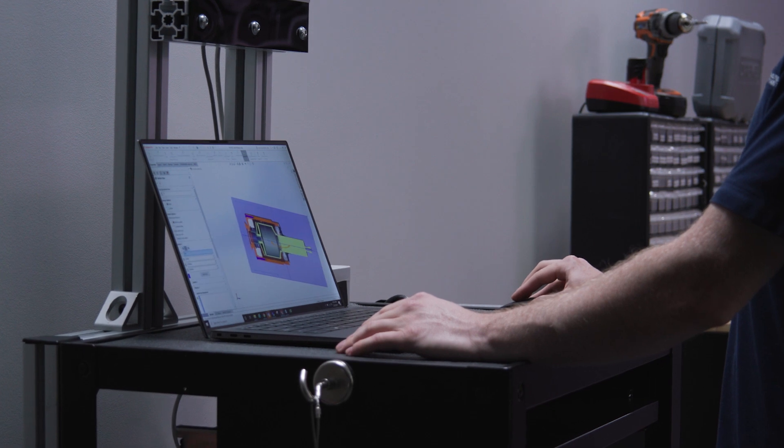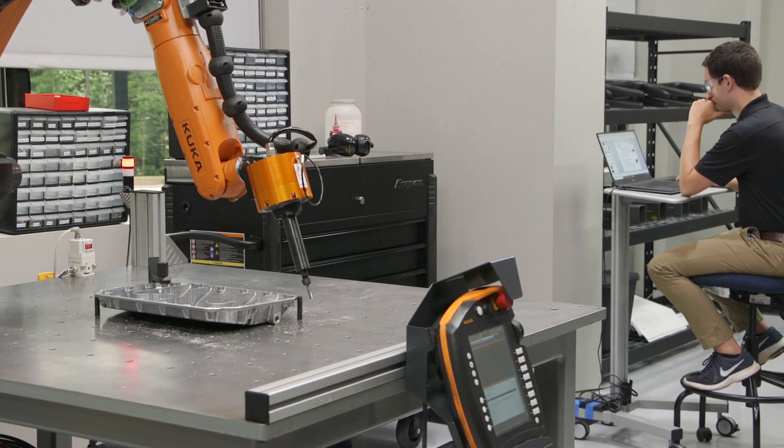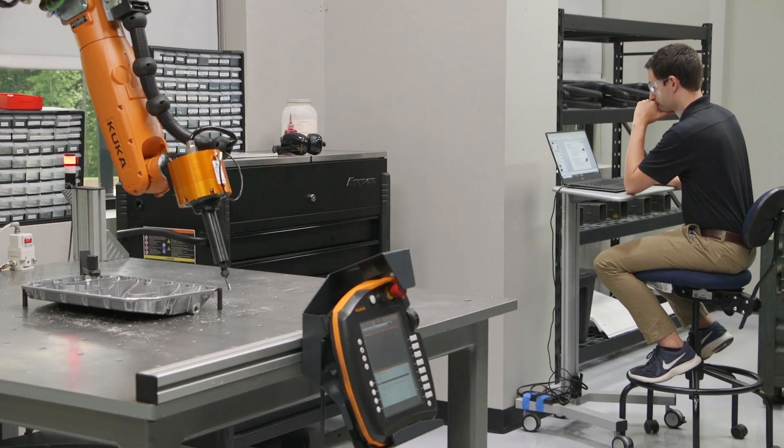The function of the material removal team is really unique in that we've got these three core engineering positions all working together. Between design engineering, applications engineering, and the robotic test engineers, our goal is to offer a complete package.